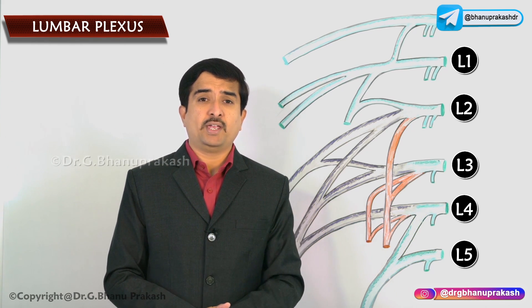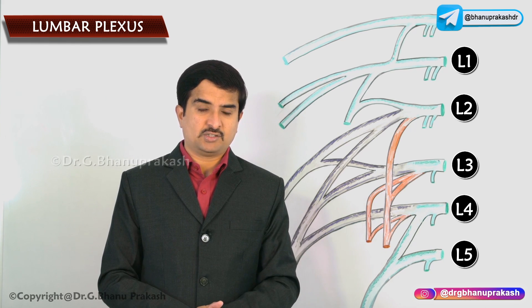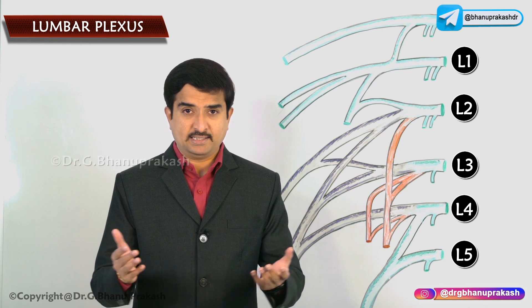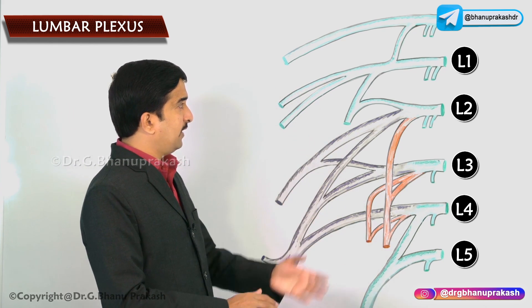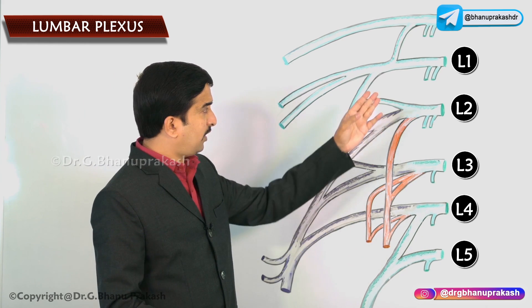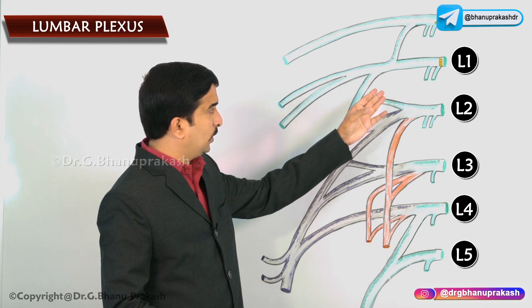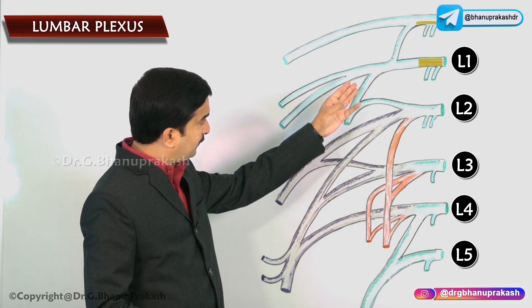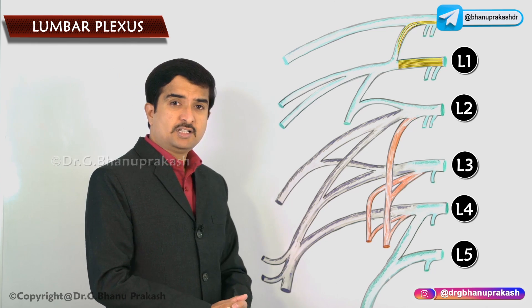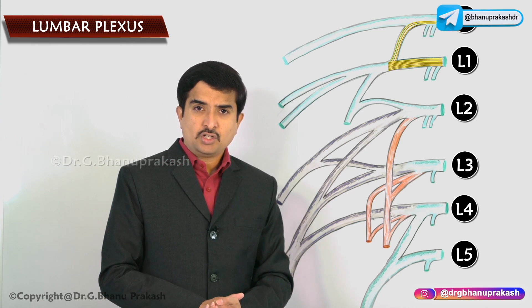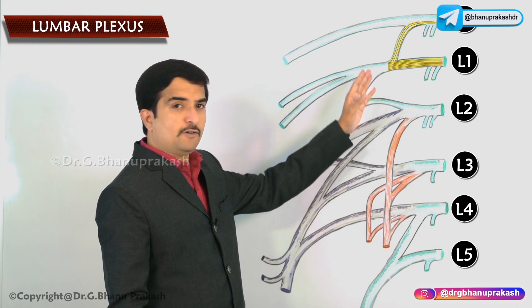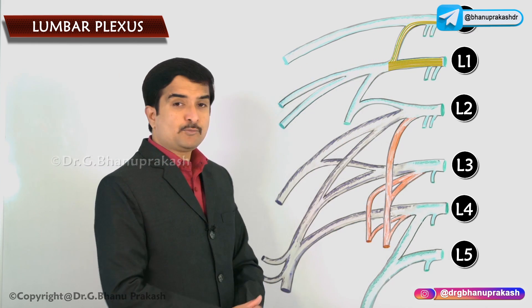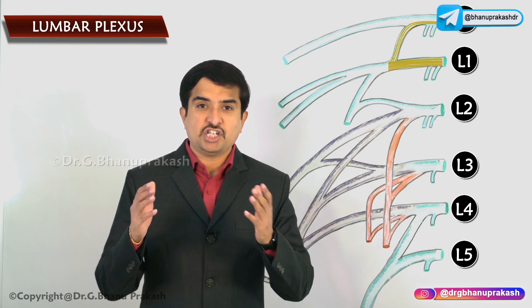Now we shall discuss the various branches given off by the lumbar plexus. The ventral ramus of L1 also receives some fibers from the last thoracic nerve, T12.